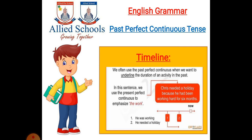Here is its timeline. Look at the right bottom corner. The timeline is showing two actions. The first one that was continuing and the second one that started after the first action. The first action was he was working and the second one was he needed a holiday. Look at the sentence in the red box: Chris needed a holiday because he had been working hard for six months.